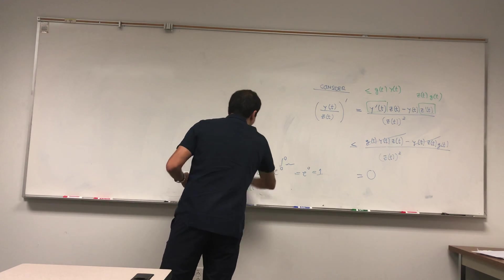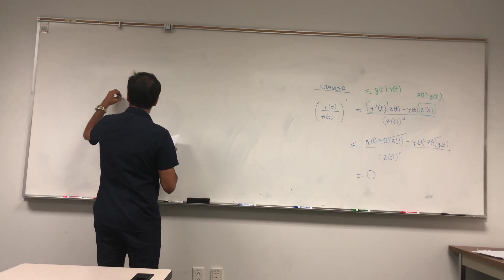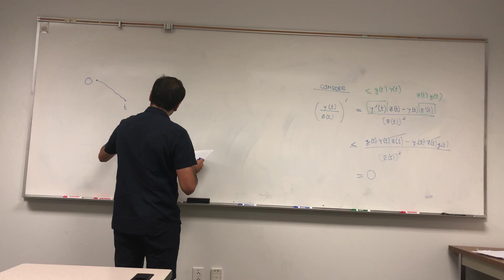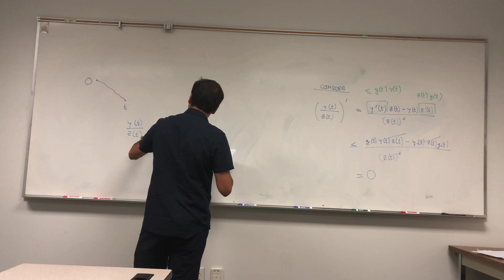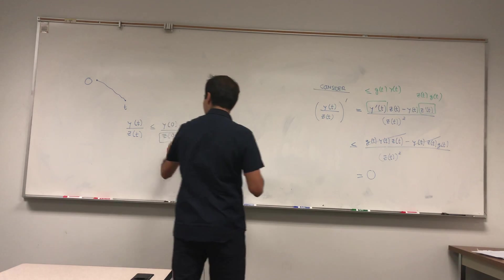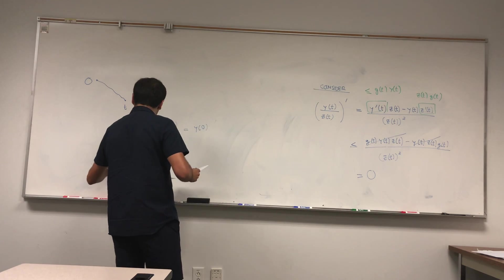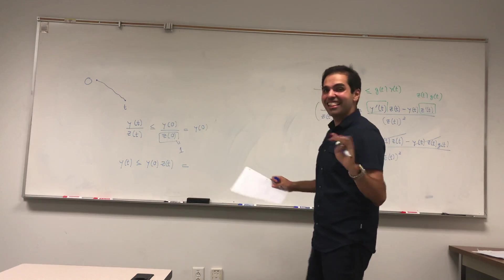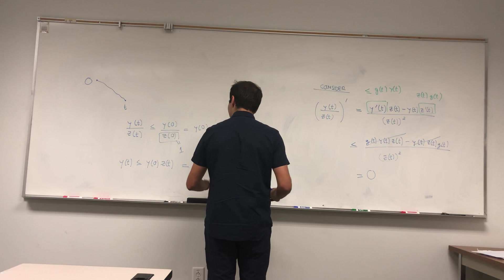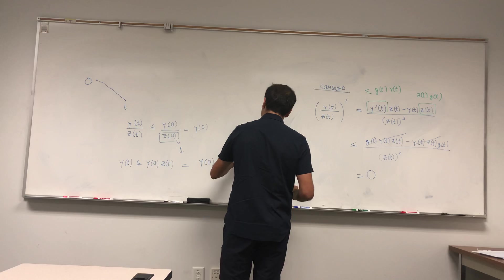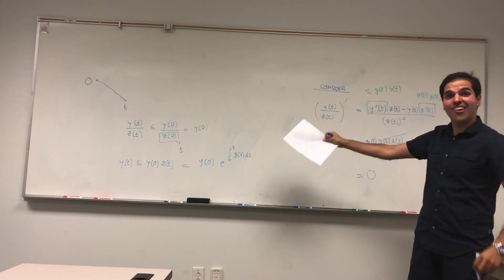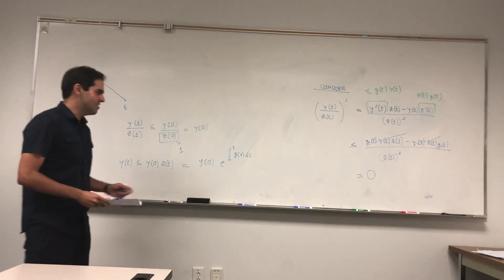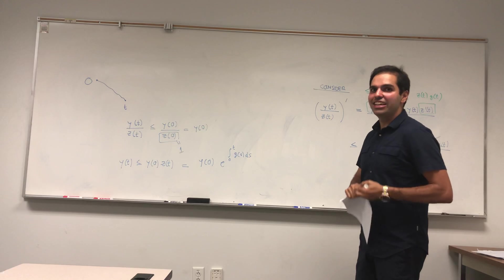Since y(t)/z(t) is decreasing, it's smaller than its value at zero: y(t)/z(t) ≤ y(0)/z(0). But z(0) = 1, so this is just y(0). Therefore y(t) ≤ y(0)·z(t) = y(0)·e^(∫₀ᵗ g(s) ds). Gronwall's inequality has been proven. That's why I wanted to cover this — the proof is so neat.